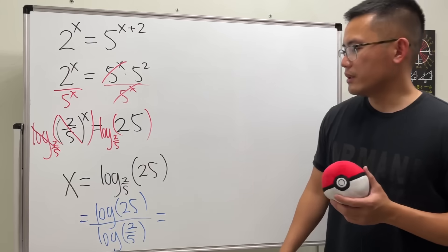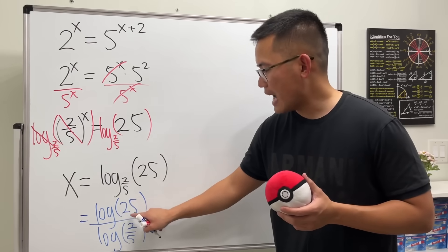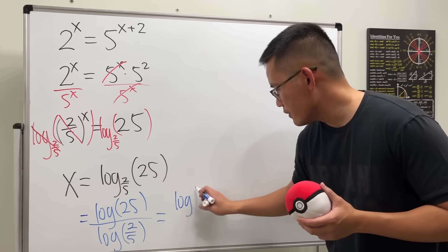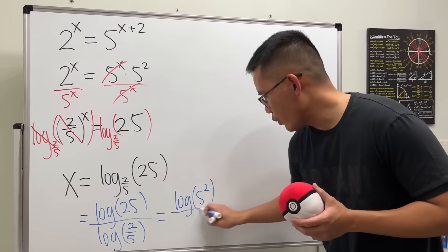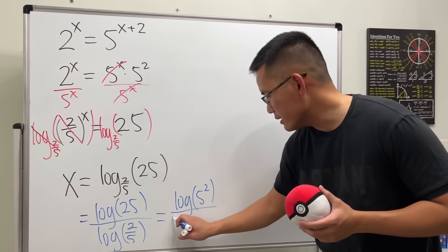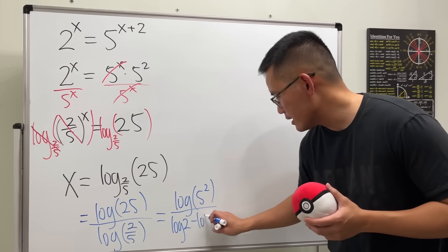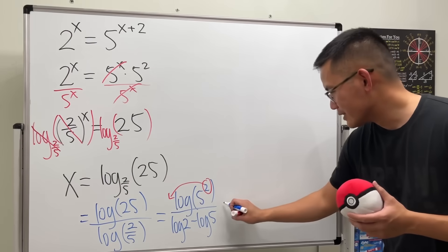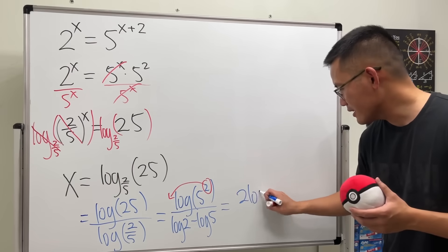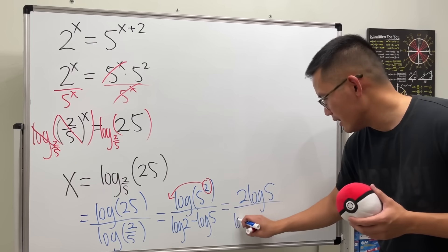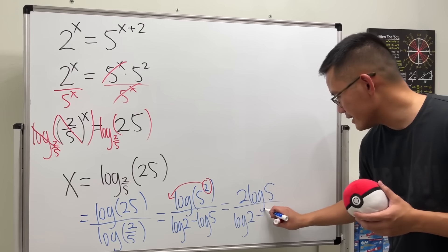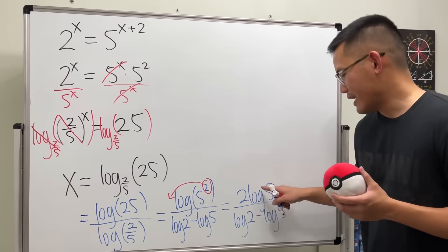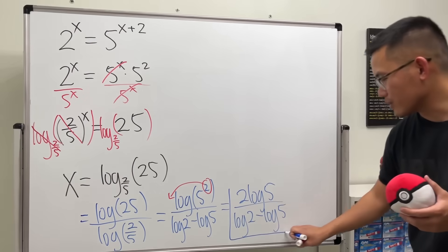What's log of 25? This is the same as 5 squared. So we can write log 5 squared over — and we can break this apart as log 2 minus log 5. Lastly, we can bring the exponent to the front, so this becomes 2 log 5 over log 2 minus log 5. And if you use ln, you'll just have ln throughout — that's the natural log.